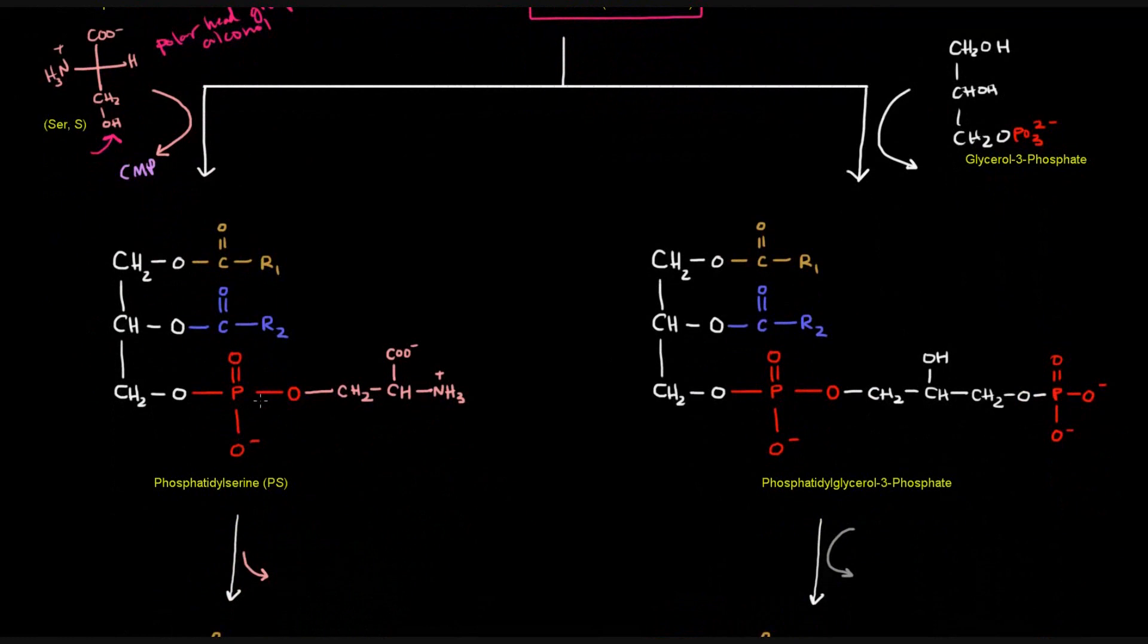And so this basically replaces the CMP portion. The CMP portion falls off, and it's replaced by this serine. And so we get this. And it might even be a little bit more helpful to kind of see this O, this O here, drawn in this pink color to show that that O, this is the OH that's connected.